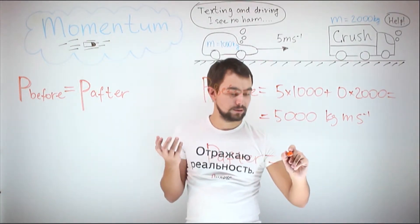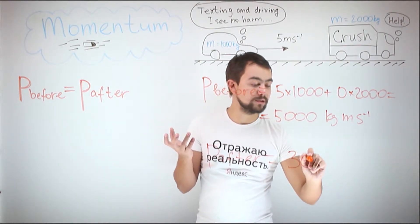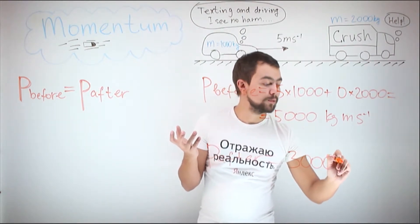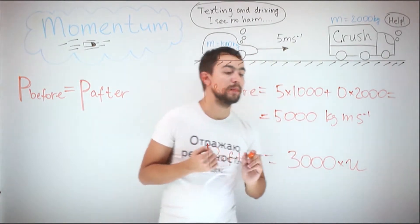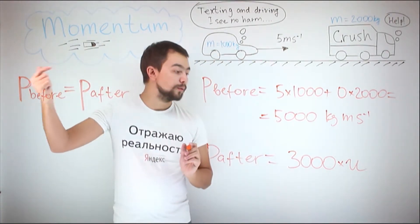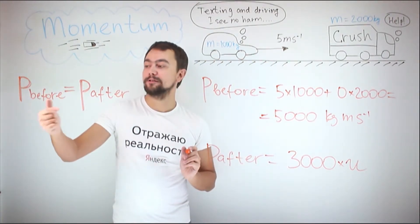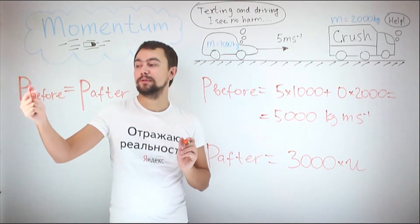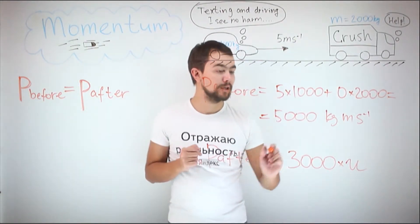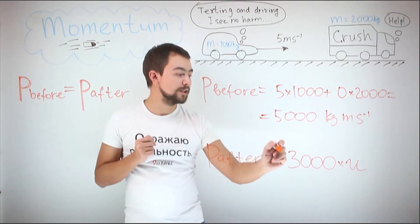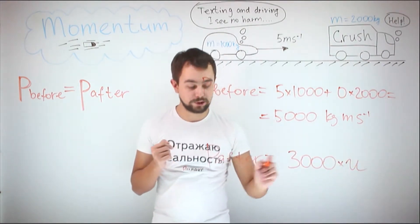We need to find it. So 3,000 multiplied by u. And since the law of conservation of momentum states that the momentum before is equal to the momentum after, 5,000 must be equal to 3,000 times u.